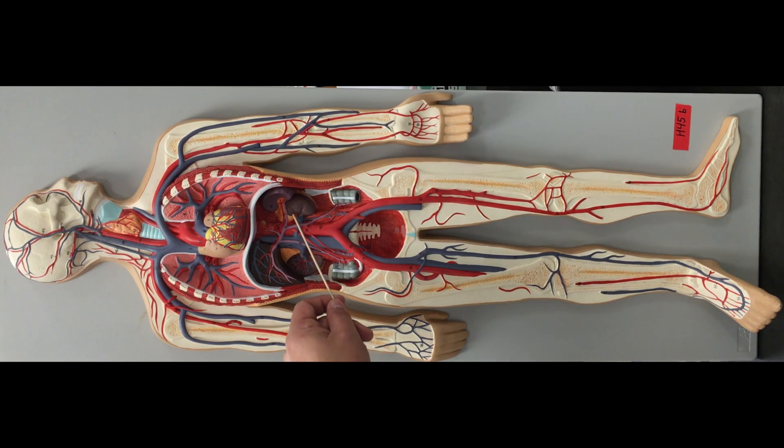There's a few more arteries in between we have to talk about. You have your right and left renal arteries right here. You have your ovarian or testicular arteries, depending if this is a male or female. We can call these our gonadals.